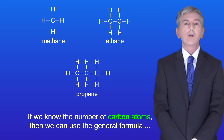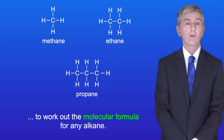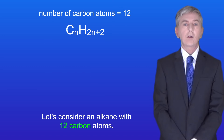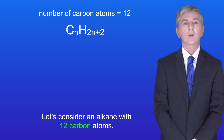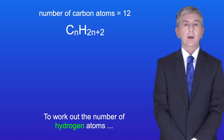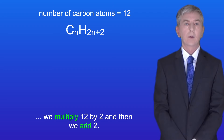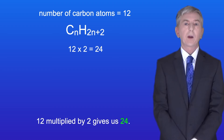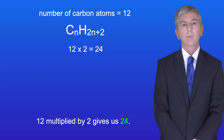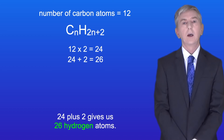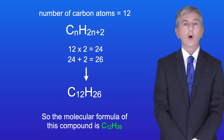If we know the number of carbon atoms then we can use the general formula to work out the molecular formula for any alkane. Let's consider an alkane with 12 carbon atoms. To work out the number of hydrogen atoms we multiply 12 by 2 and then we add 2. 12 multiplied by 2 gives us 24. 24 plus 2 gives us 26 hydrogen atoms. So the molecular formula of this compound is C12H26.